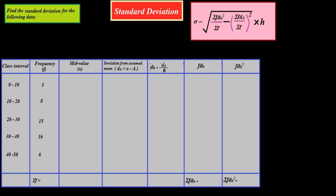First, DH is equal to the deviation from the assumed mean divided by the class width H. H is the class width — it is the upper limit minus the lower limit. Here H is 10. To find DA, the deviation from the assumed mean, we use X minus A. For this, we need to find X, the mid value, which is the lower limit plus the upper limit divided by 2.